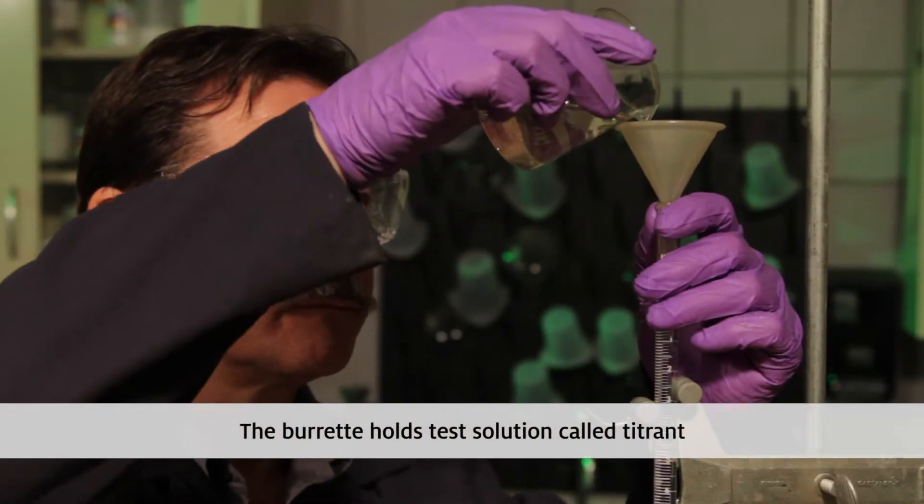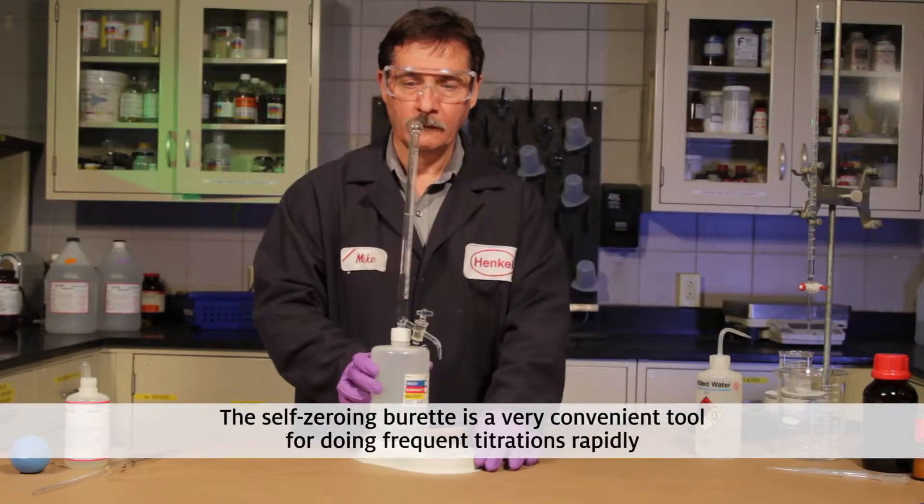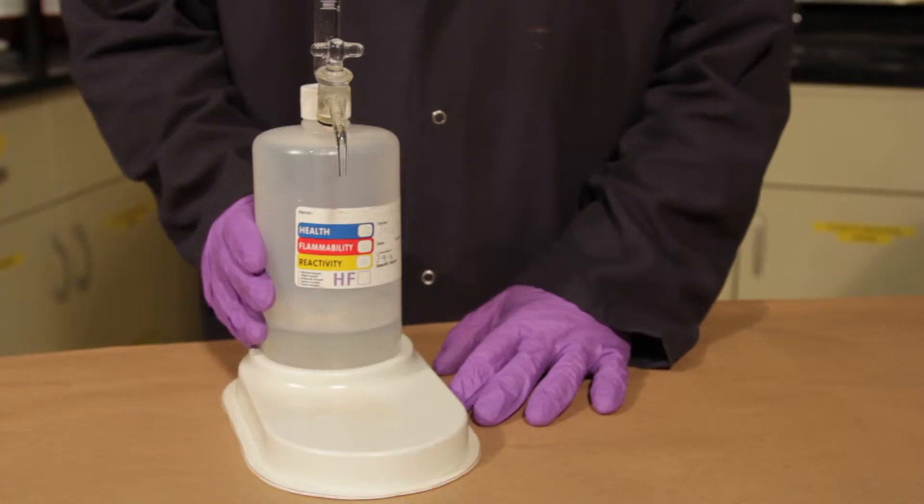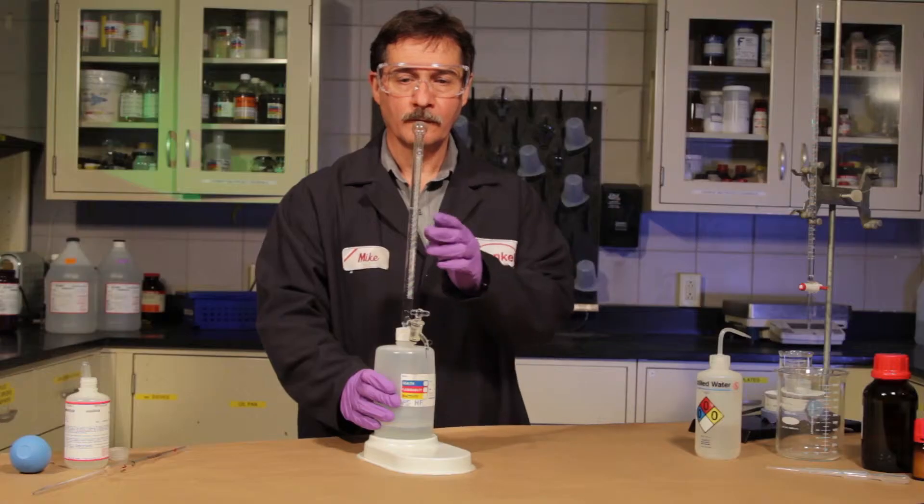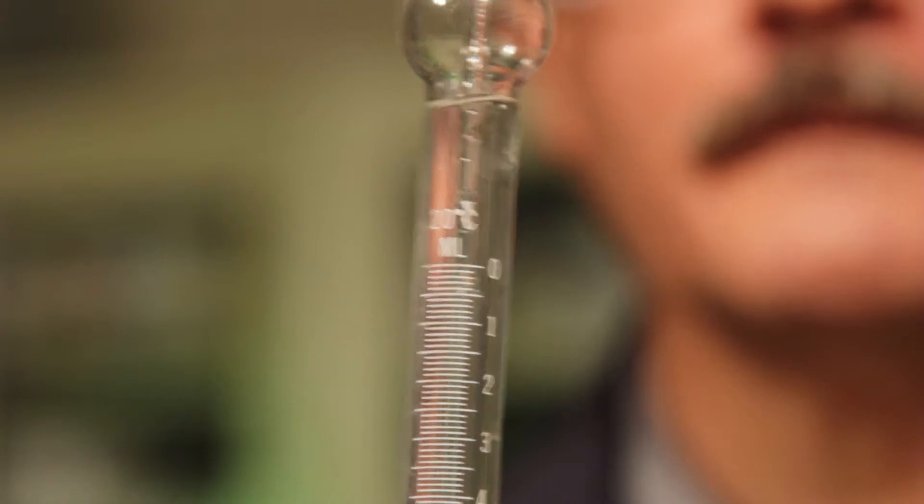The burette holds test solution, sometimes called titrant. The self-zeroing burette is a very convenient tool for doing frequent titrations rapidly. The burette sits on a reservoir of titrant and with a quick squeeze and release, it fills the burette and automatically sets the solution level to the zero or starting point.